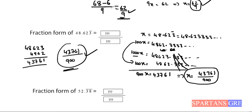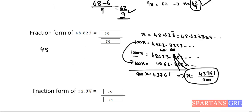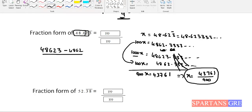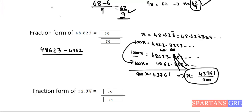Now applying the shortcut to 48.623̄. Write the number as 48623. Subtract the non-recurring part: 4862 is non-recurring, so numerator = 48623 − 4862 = 43761. For the denominator, after the decimal there are three digits: one is recurring and two are non-recurring. So put one 9 and two zeros: denominator = 900. Answer: 43761/900. You got this in a single step!